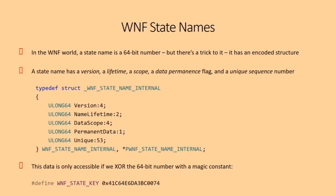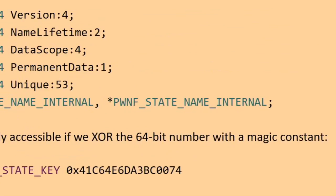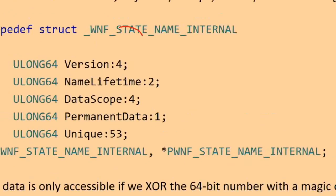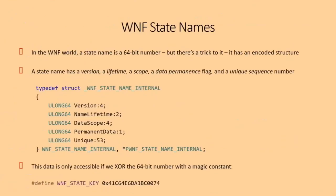In the WNF world, what you have aren't events — they're WNF state names, which are 64-bit IDs. But there's a trick: these numbers actually encode a data structure inside of them. They're not just random numbers — they have bits representing a version, a lifetime, a scope, a permanent flag, and a unique sequence number. You take the 64-bit number, XOR it with a magic key, and you get this data structure out with those different fields.